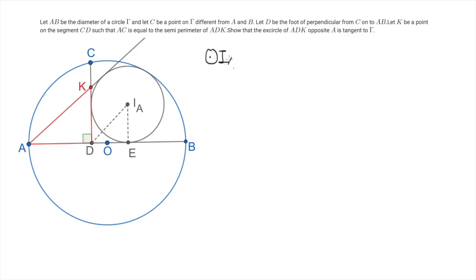So since IA is the excircle of the triangle ADK, it touches the side AB. And let's call this point E. It is well known that AE equals the semi-perimeter of the triangle ADK. And by assumption this is AC. So we have AE equals AC.